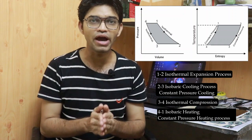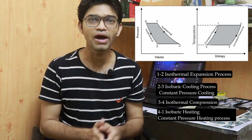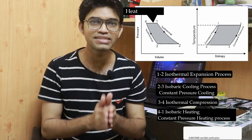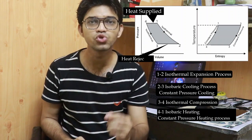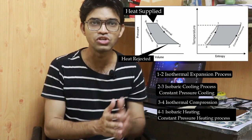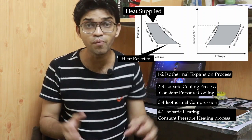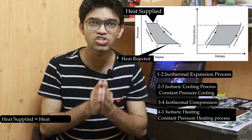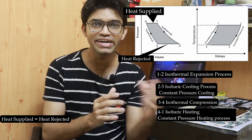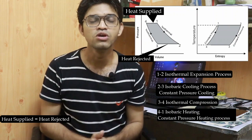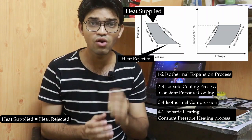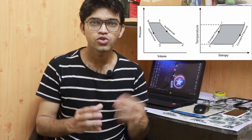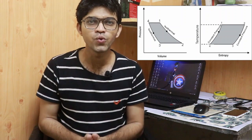To recap: process 1→2 is isothermal expansion, 2→3 is constant pressure cooling, 3→4 is isothermal compression, and 4→1 is constant pressure heating. Heat is added during process 4→1 and rejected during process 2→3. Importantly, the total heat added and heat rejected during these constant pressure processes are equal — just as in the Stirling cycle's constant volume processes — so in calculations we only use the work done during the isothermal expansion and compression.